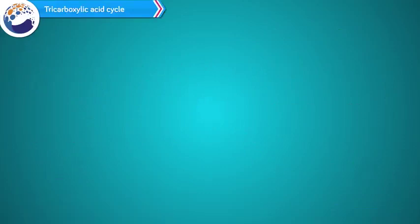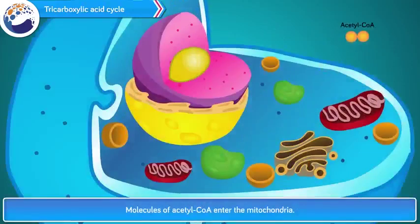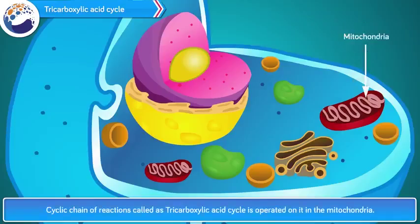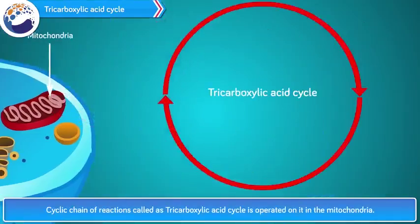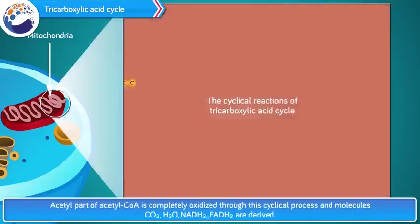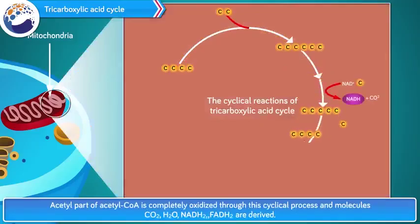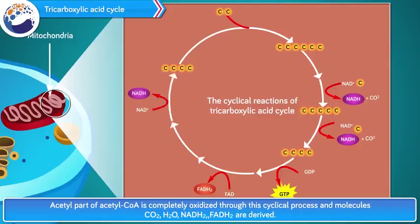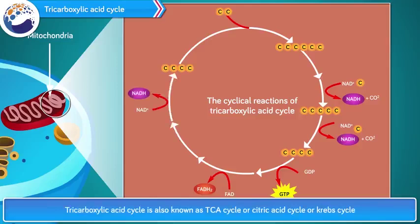Both molecules of acetyl CoA enter the mitochondria. A cyclic chain of reactions called the tricarboxylic acid cycle is operated on it in the mitochondria. The acetyl part of acetyl CoA is completely oxidized through this cyclical process, and molecules of CO2, H2O, NADH2, and FADH2 are derived. This is also known as the TCA cycle, citric acid cycle, or Krebs cycle.